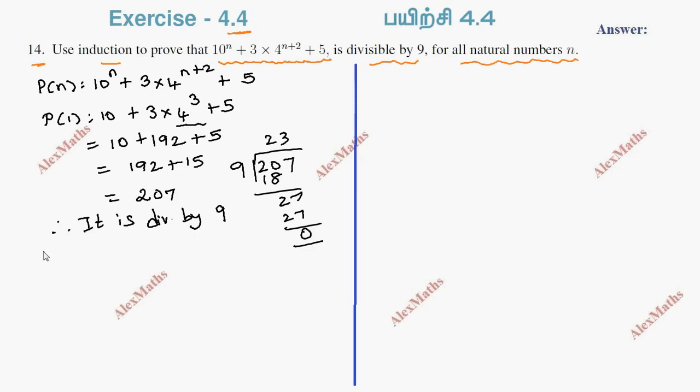Okay, assume P(k) is true. So P(k) is 10^k + 3 × 4^(k+2) + 5 is divisible by 9.